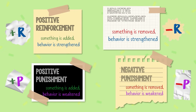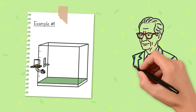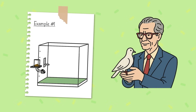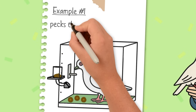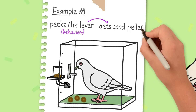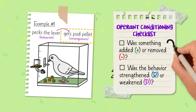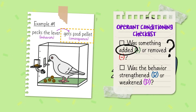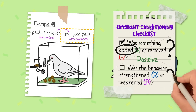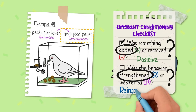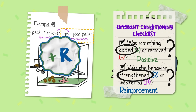Now let's apply these concepts to four examples. In one of B.F. Skinner's famous pigeon experiments, the birds learned to peck a lever. Every time they pecked, they got a food pellet, which led to more lever pecking. The pigeon pecked the lever — behavior — and got a food pellet — consequence. Was something added or removed? Something was added, so it's positive. Did it increase or decrease the behavior? Increase, so it's reinforcement. This is an example of positive reinforcement.